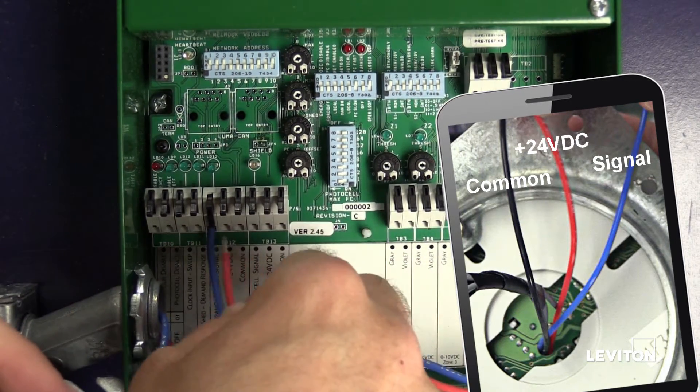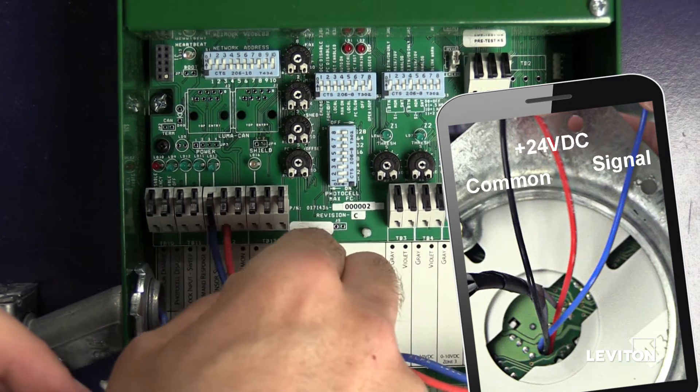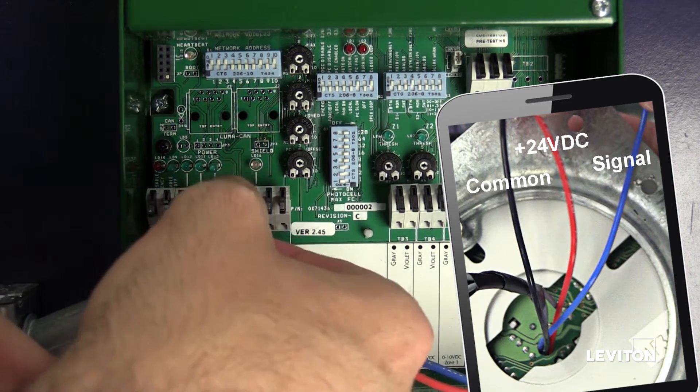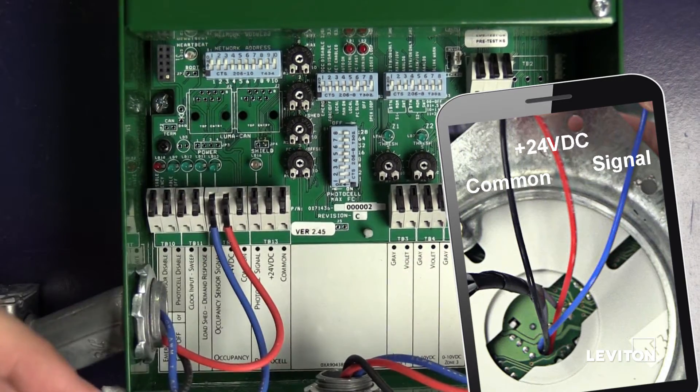Land your plus 24V DC wire onto the connector labeled Plus 24V DC. Press the locking mechanism to secure the connection.